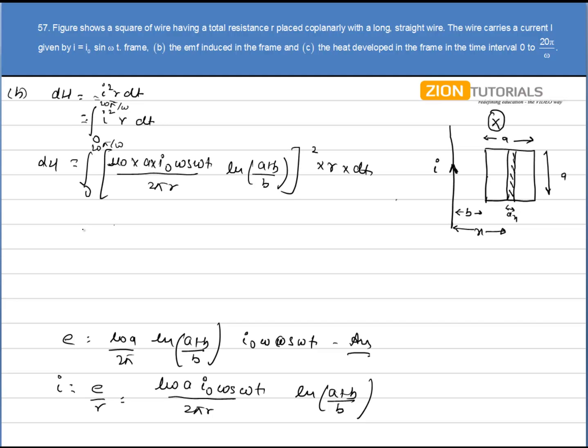Now it is not possible to solve this equation over here due to the insufficiency of the page. So I am directly writing the answer that comes out to be on solving this equation: 5 mu not square into A square into i not square omega divided by 2 pi r, natural log square of 1 plus B A by B. That is my answer. Thank you.